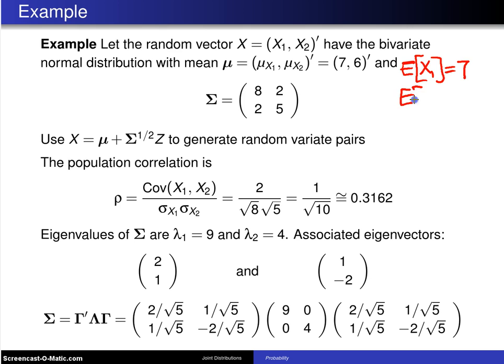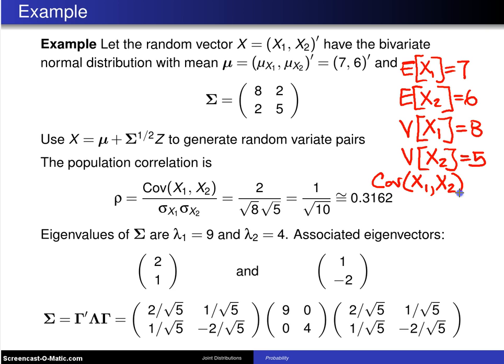So already we start out saying the expected value of X1 is 7 and the expected value of X2 is 6, and variance covariance matrix 8, 2, 2, 5. So immediately you can pick off of that the variance of X1 is 8 from here. The variance of X2 is this element, which is 5. And the covariance of X1 and X2 sits on the off diagonal elements and that is 2.